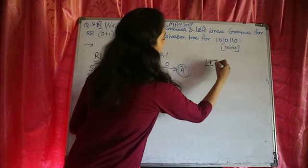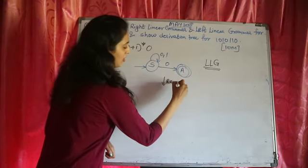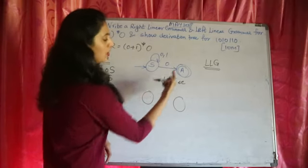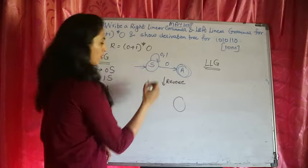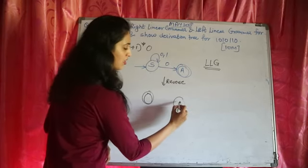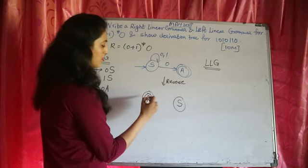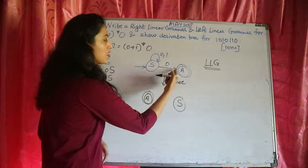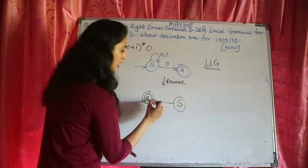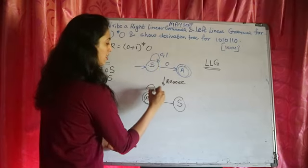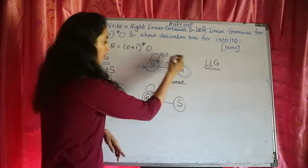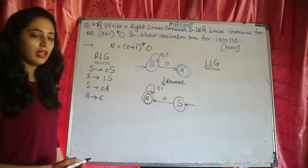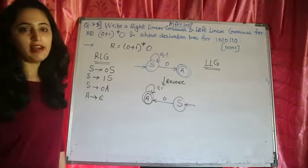Now, to make the left linear grammar, we just need to reverse this DFA. What we need to do is: make the final state the start state, and make the start state the final state. The new start state will be named S, and the old start state can be named A. Keep the symbols as they are but just reverse the direction of the transitions. After reversing the DFA, we can now write down the left linear grammar.